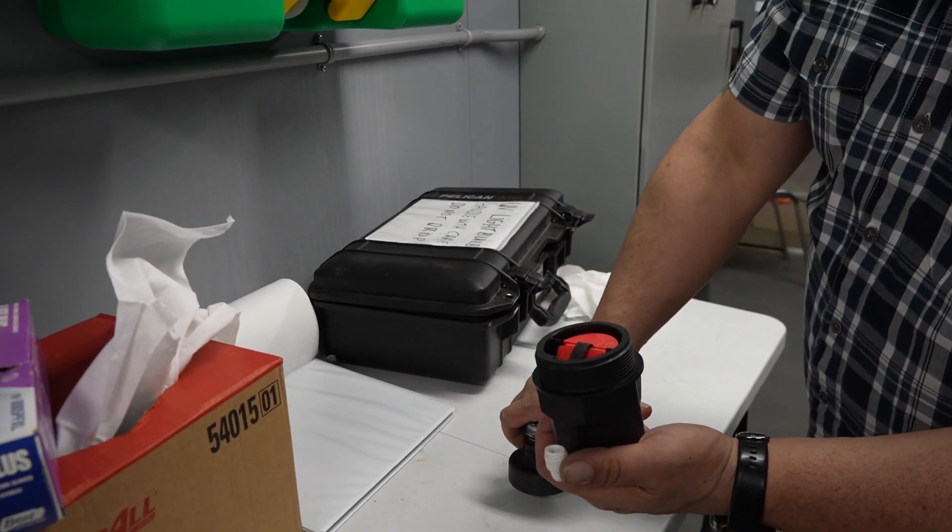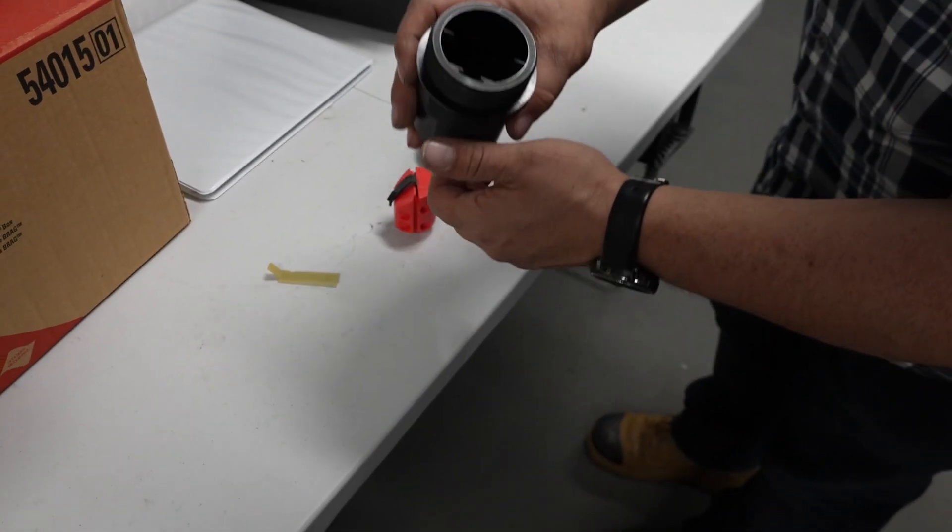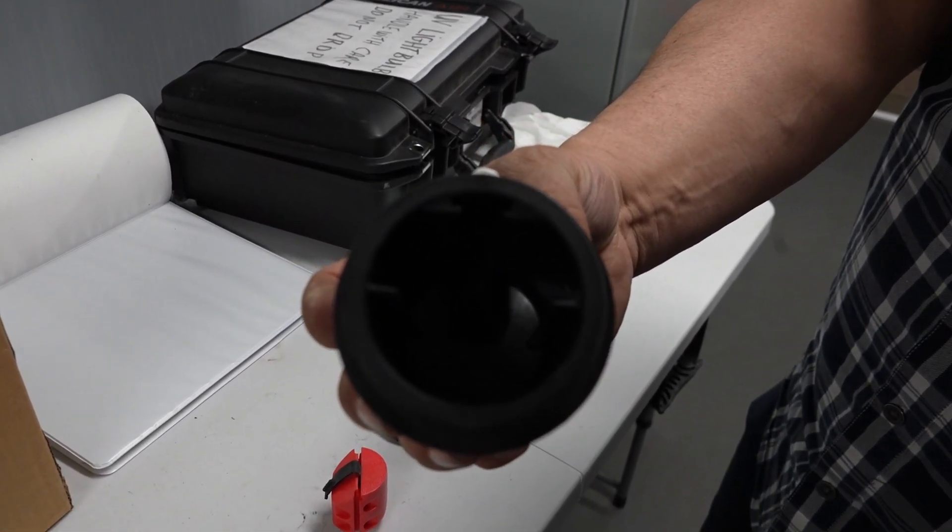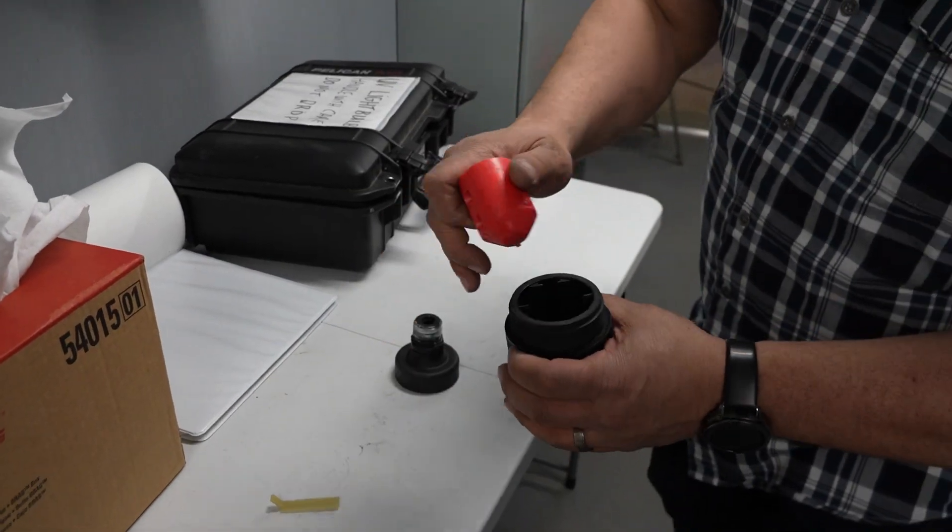All these pieces can be pulled out. You clean all these pieces, make sure there's no corrosion or plugging in the vent on the top there, and this float opens and closes.